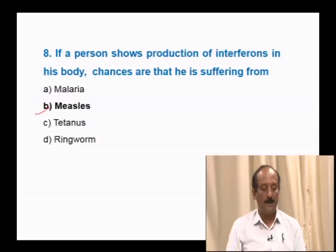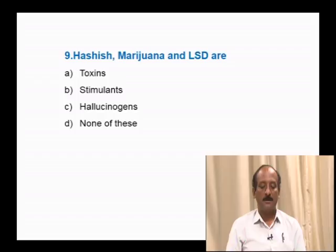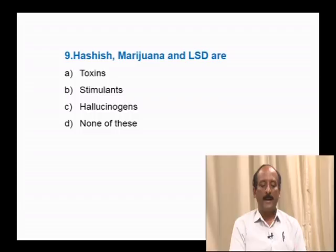Question number 9: Hashish, marijuana and LSD are — toxins, stimulants, hallucinogens, none of these. Hashish, marijuana, and LSD are abusing drugs. The excessive intake of such drugs results in a hallucination effect, commonly called hallucinogens. The correct answer is option C: hallucinogens.